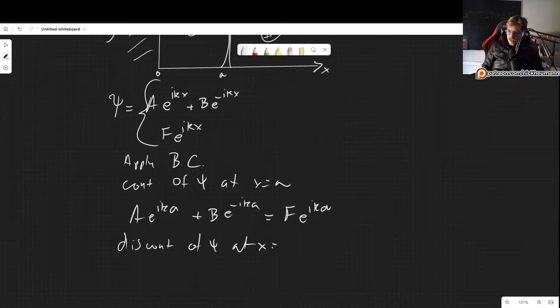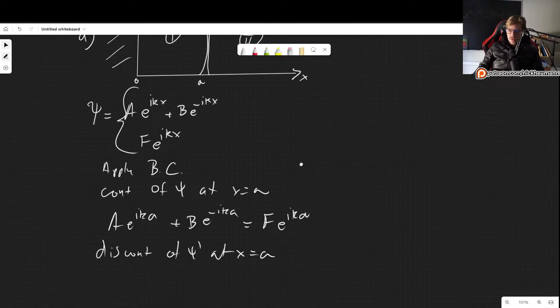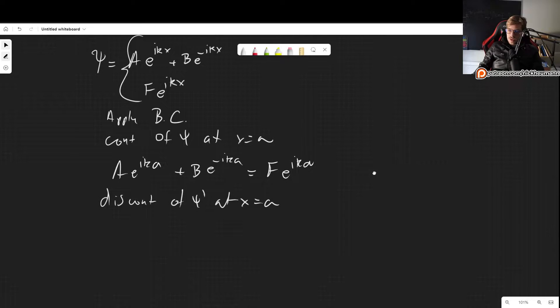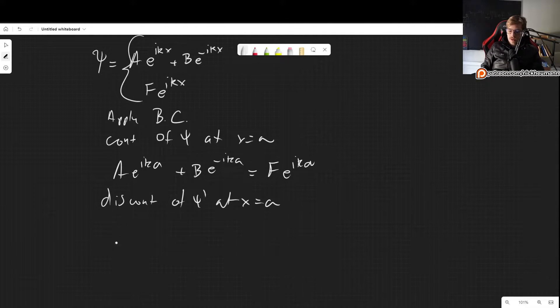But we also have the discontinuity of psi prime at x equals a. So not of psi, but of the derivative, so psi prime. And this is also something we have done a lot of times before, right? This is just the same as our usual dealing with the delta potential. So in this case, we get,